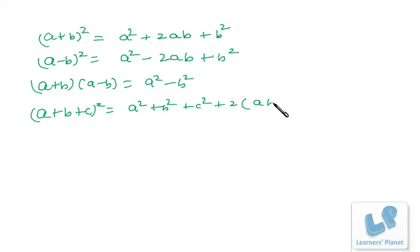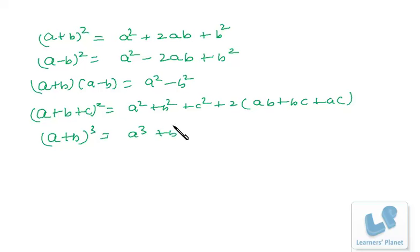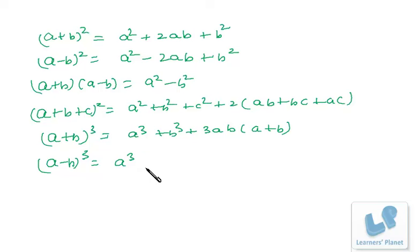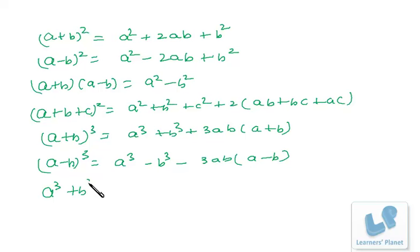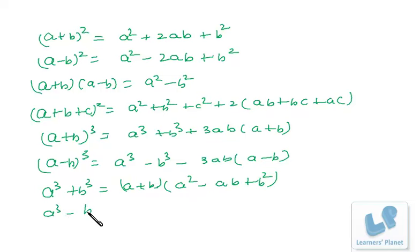We also have (a+b)³ = a³ + b³ + 3ab(a+b), and (a-b)³ = a³ - b³ - 3ab(a-b). Then a³ + b³ = (a+b)(a² - ab + b²), and a³ - b³ = (a-b)(a² + ab + b²).